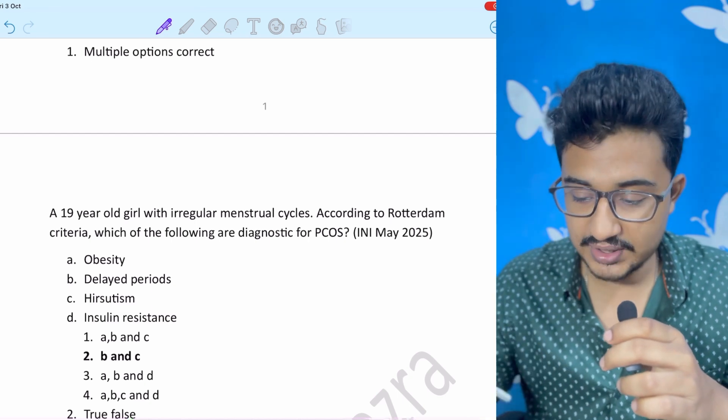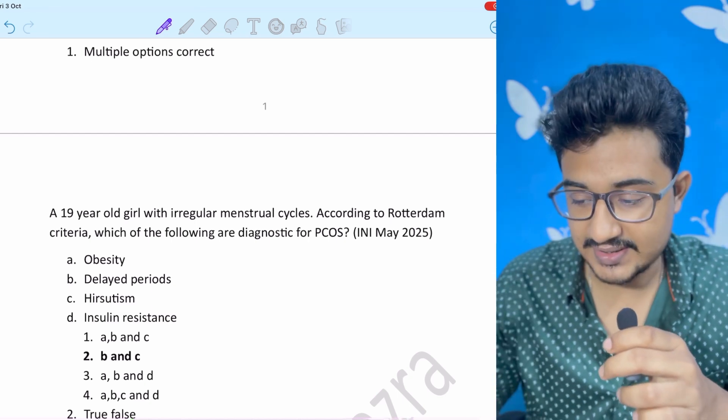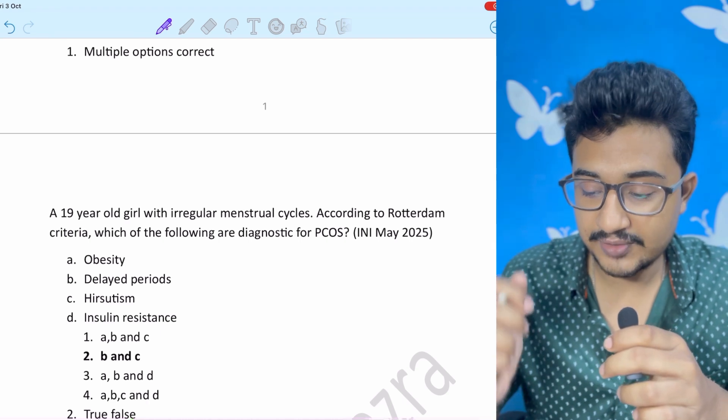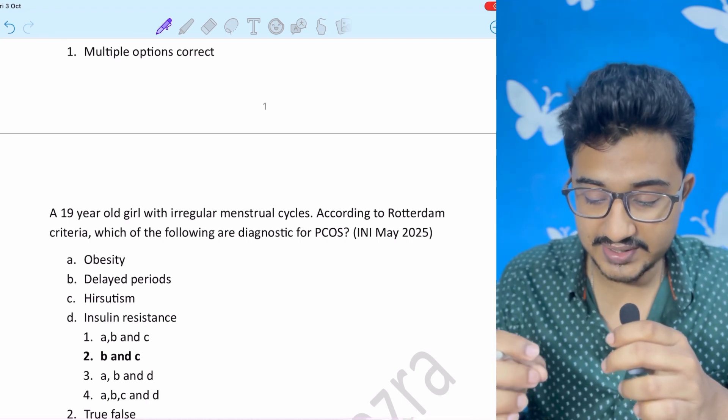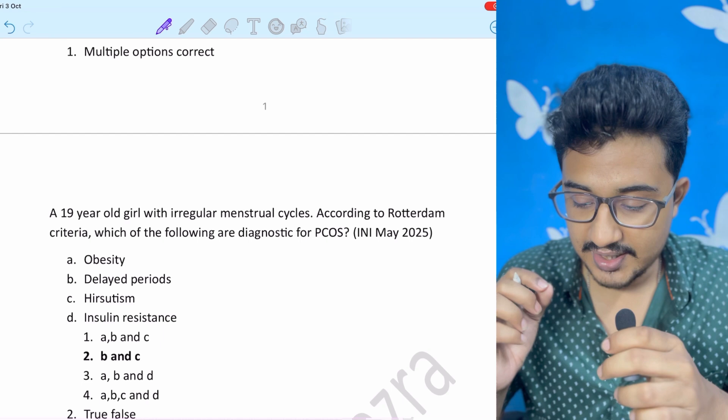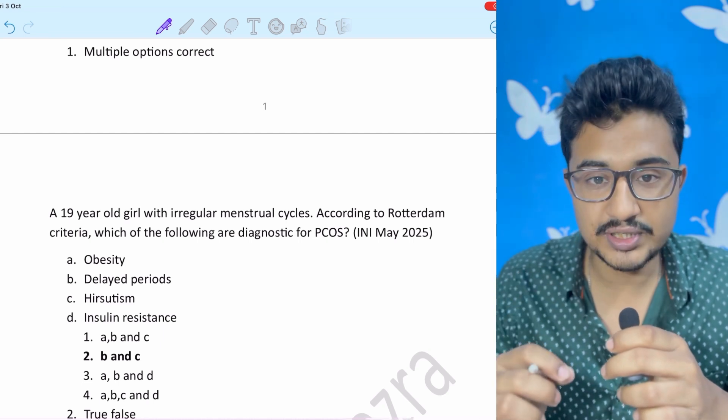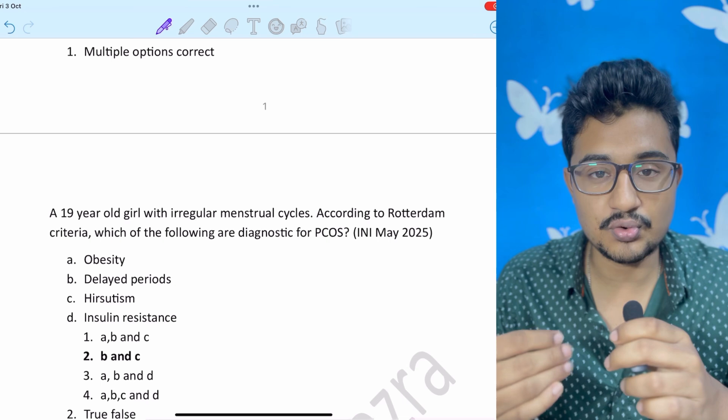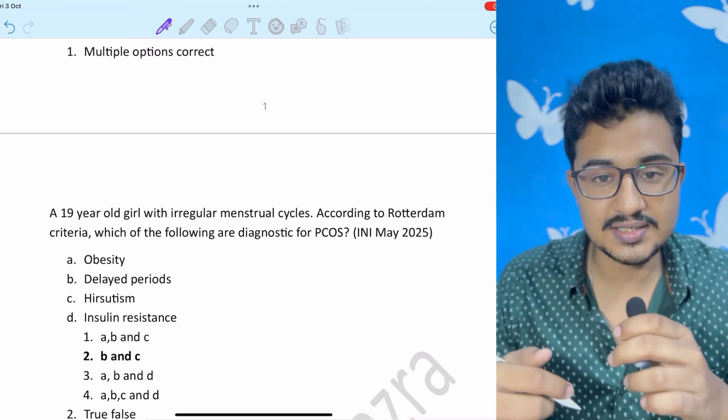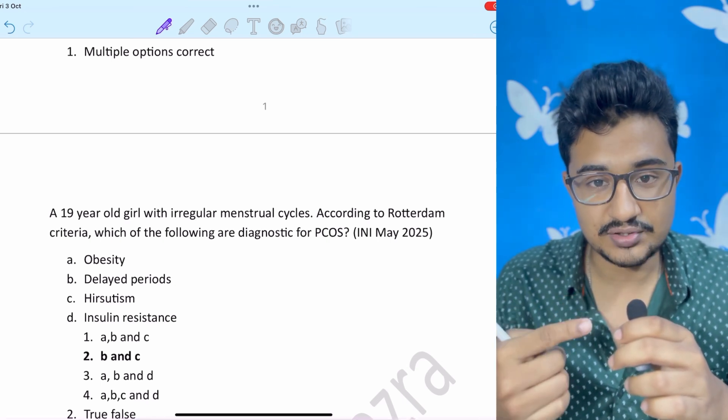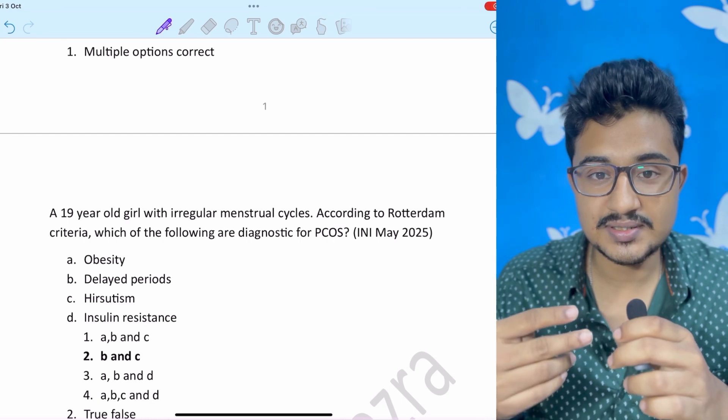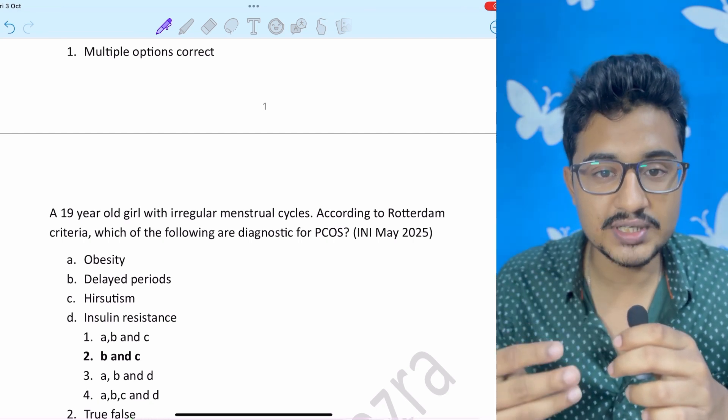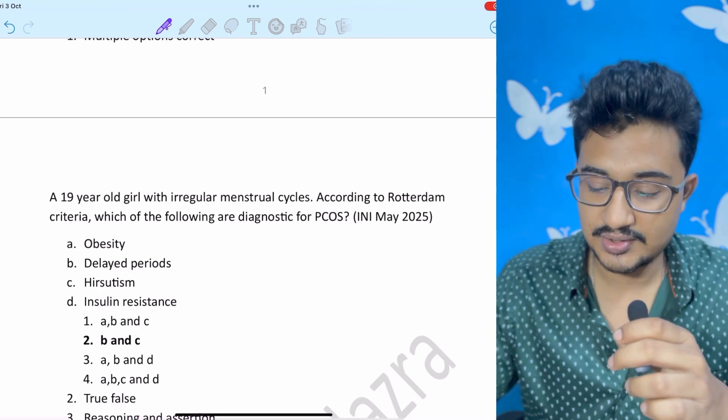A 19 year old girl with irregular menses. According to Rotterdam criteria, which of the following are diagnostic of PCOS. Options are given obesity, delayed periods, hirsutism, insulin resistance. Rotterdam criteria as you all know, consists of signs of hyperandrogenism, USG signs of PCOS and menstrual irregularities.